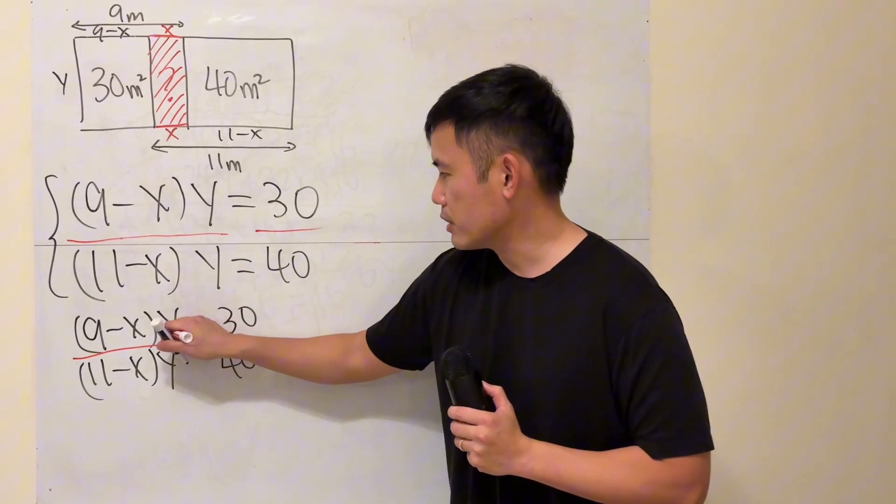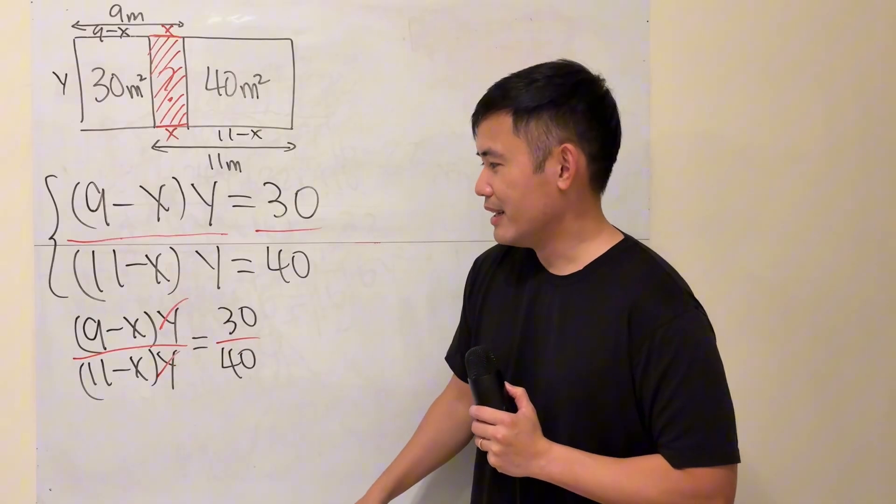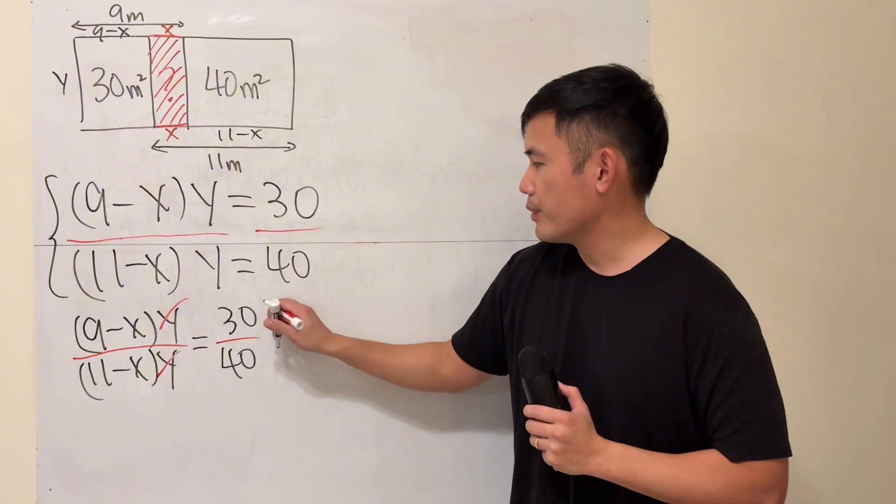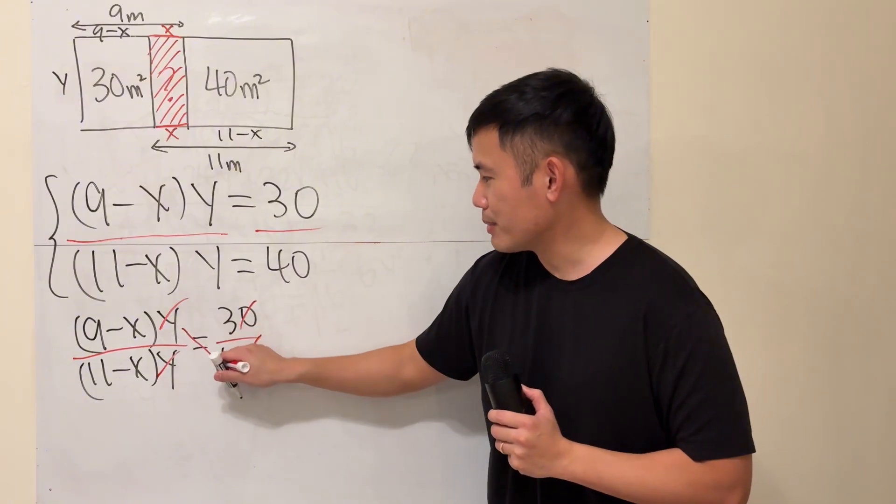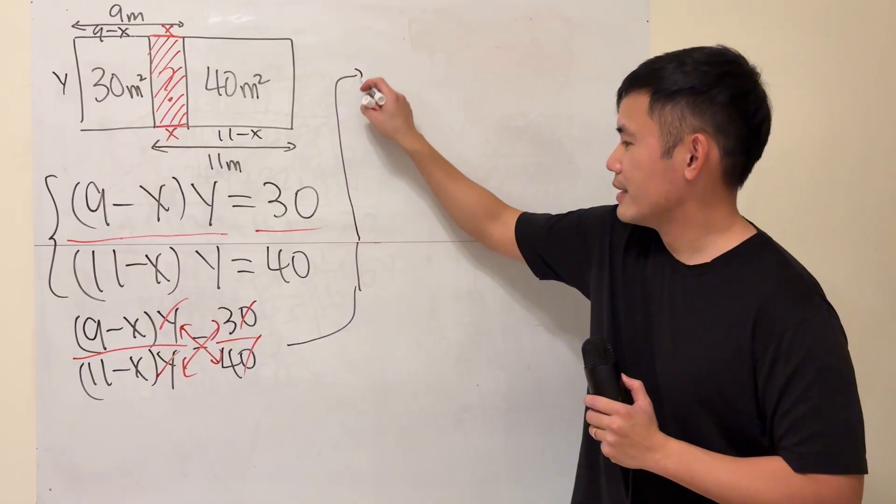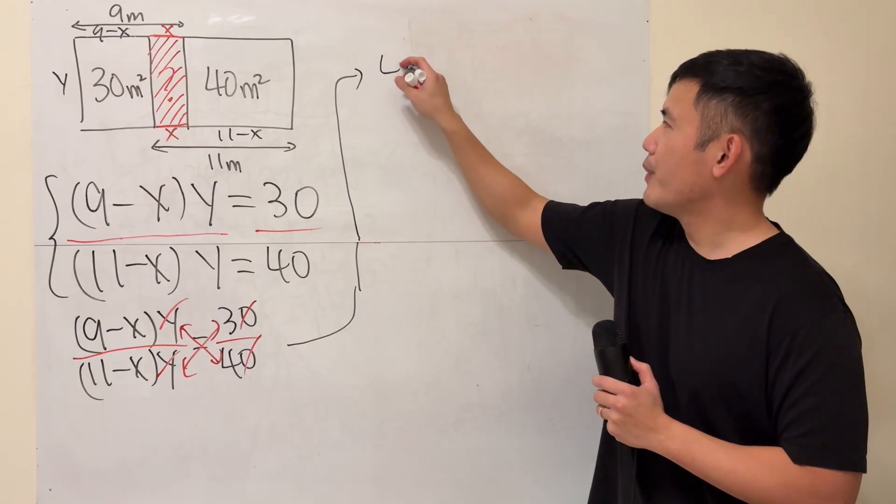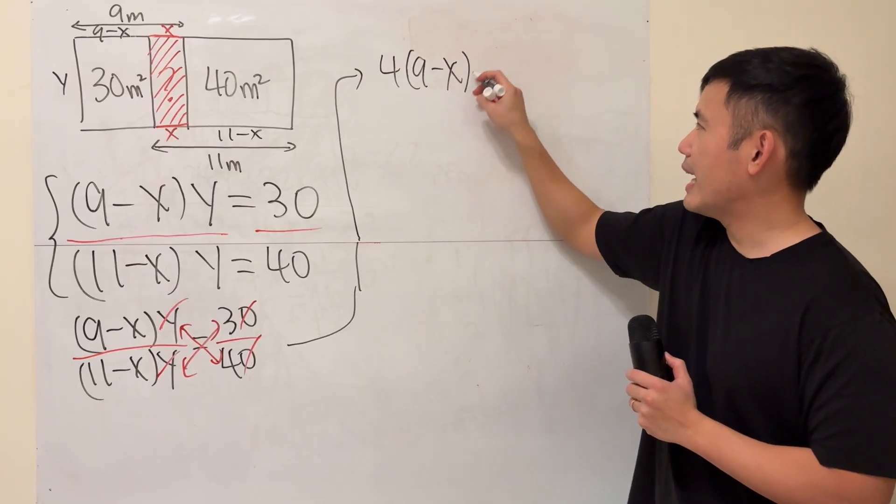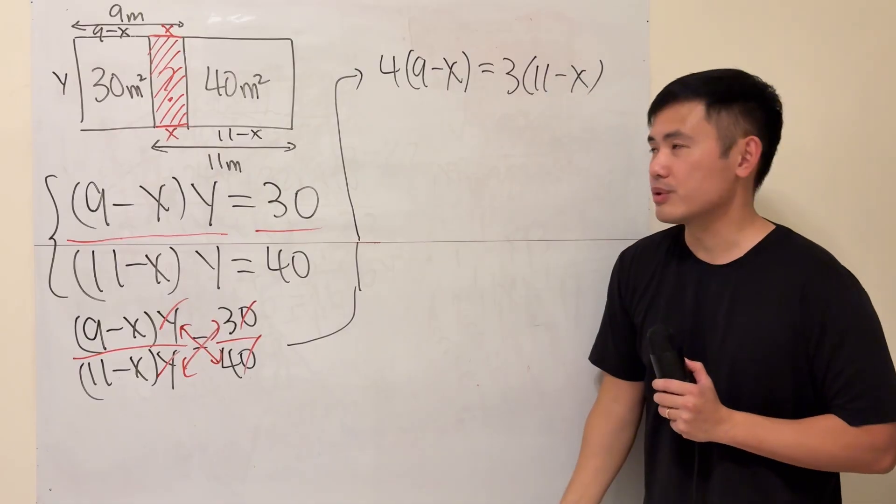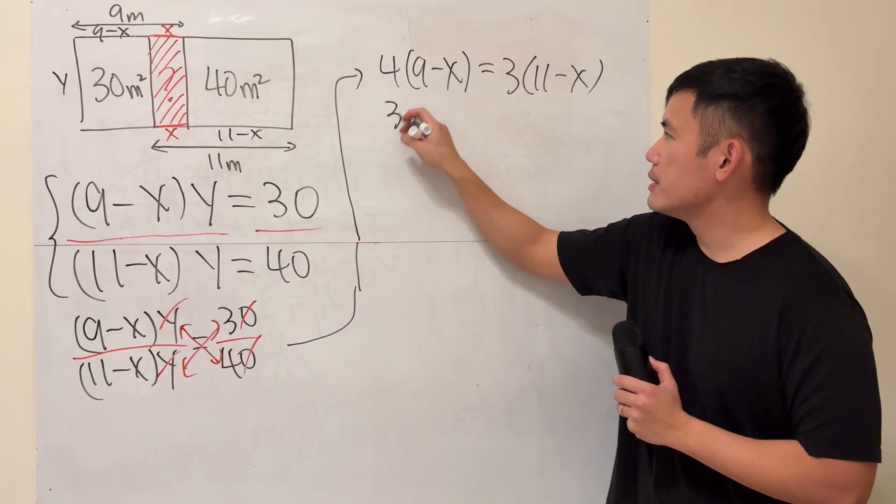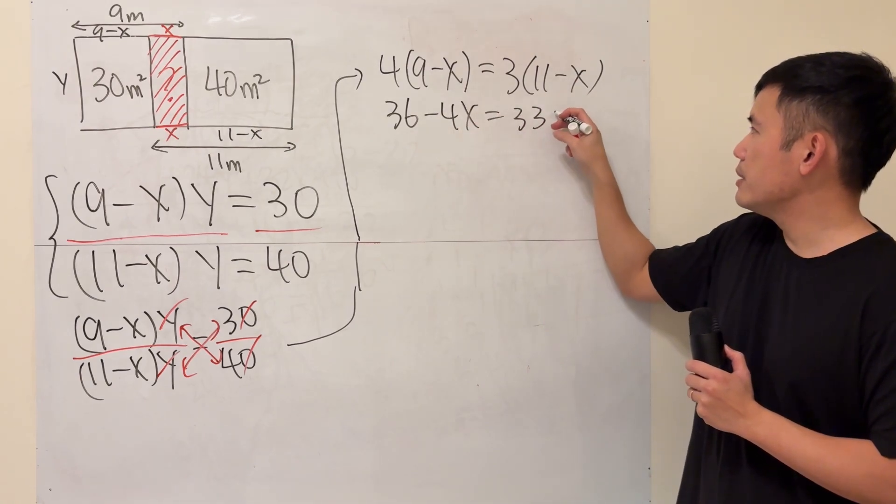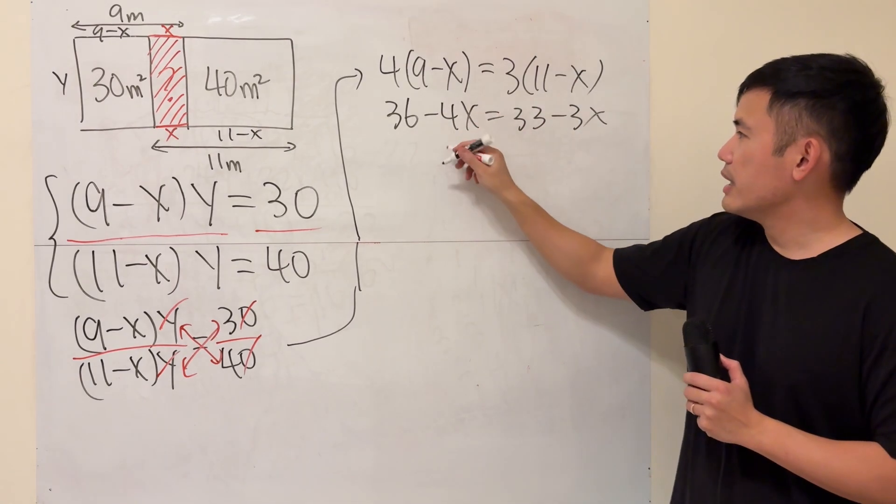The beauty of doing this is you can cancel the y. Now you have (9-x) over (11-x) equals—you can reduce that to 3/4—and then cross-multiply. Okay, here we go: 4 times (9-x) has to equal 3 times (11-x). Then we just go from there. Distribute: 36 - 4x equals 33 - 3x.